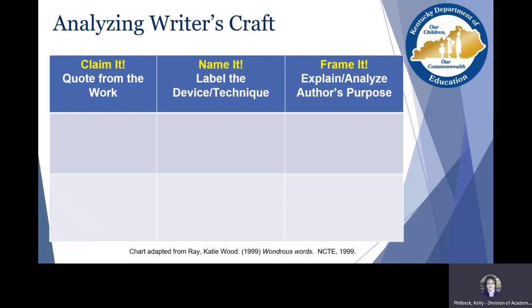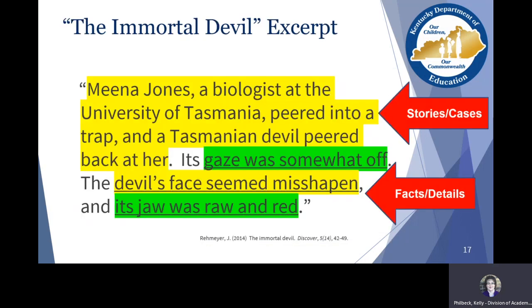We want to push students to this level: not just identifying it, but what do you think the writer's purpose was? They're making intentional choices — what was their purpose in choosing that particular element? And we need to think about what is the impact on us as readers. We'll go back and think about what we've highlighted or underlined in the text and then move on to our chart.